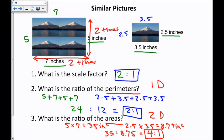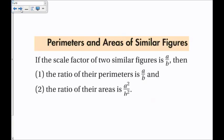If I take the ratio 2 to 1 and square both of them, I get 4 to 1 — exactly what I got for the ratio between the areas. So if the scale factor of two similar figures is a to b, then the ratio of the perimeters — a one-dimensional measurement — will also be a over b. The ratio of their areas — a two-dimensional measurement — will be a squared over b squared.